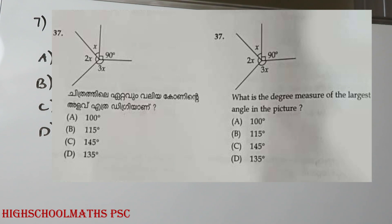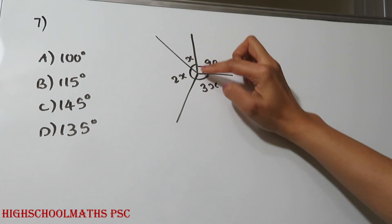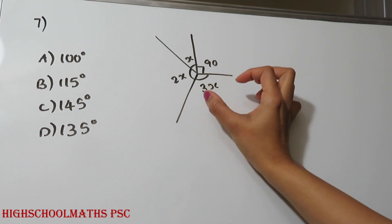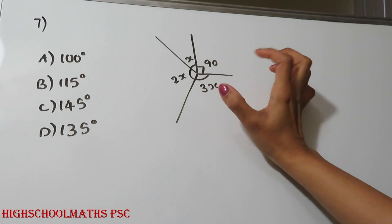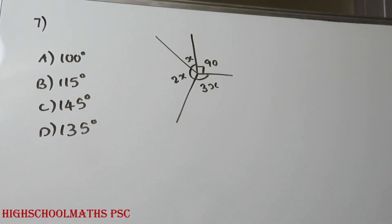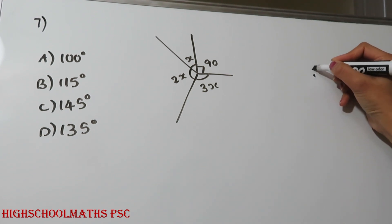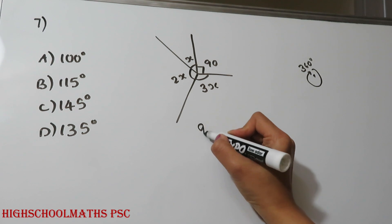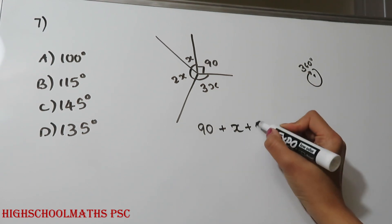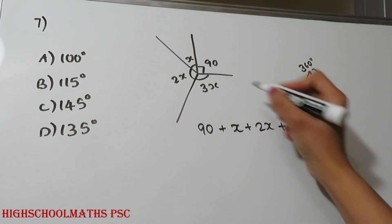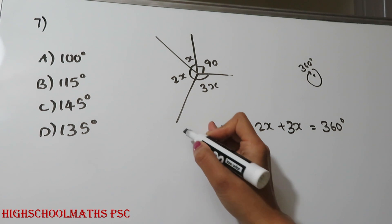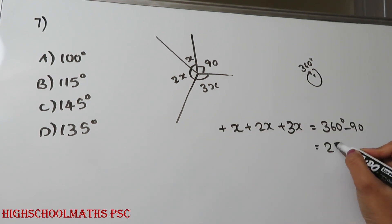What is the degree measure of the largest angle in the picture? Here we have a figure with 90 degrees, 2x and 3x. We assign x to the angles. If 3x equals 300 degrees, then x equals 100 degrees. This means 180 degrees and equals 360 degrees. 90 degrees here, 90 degrees minus 90 gives 170 degrees.